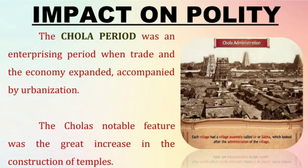Tax-free villages granted to Brahmins were known as brahmathaya. Marketing centers and towns were known as nagaram. The oor, nadu, brahmathaya and nagaram each had its own assembly.